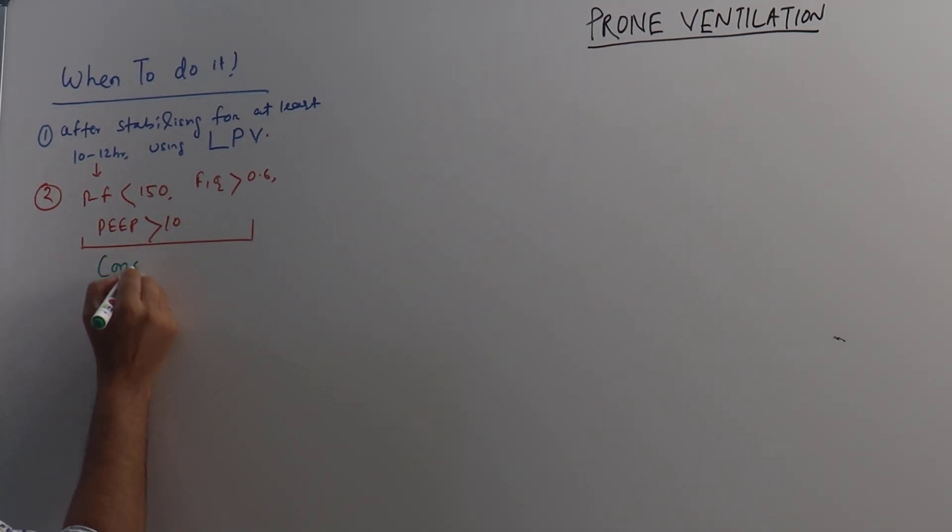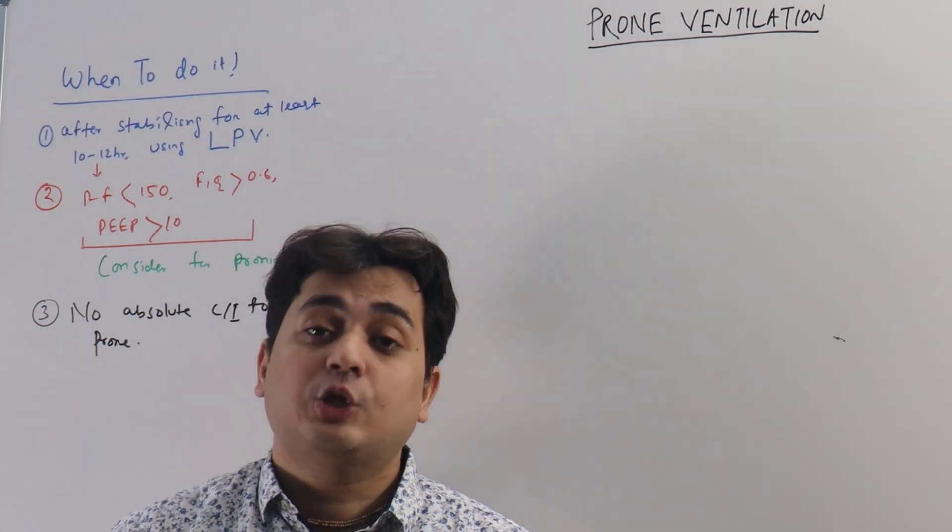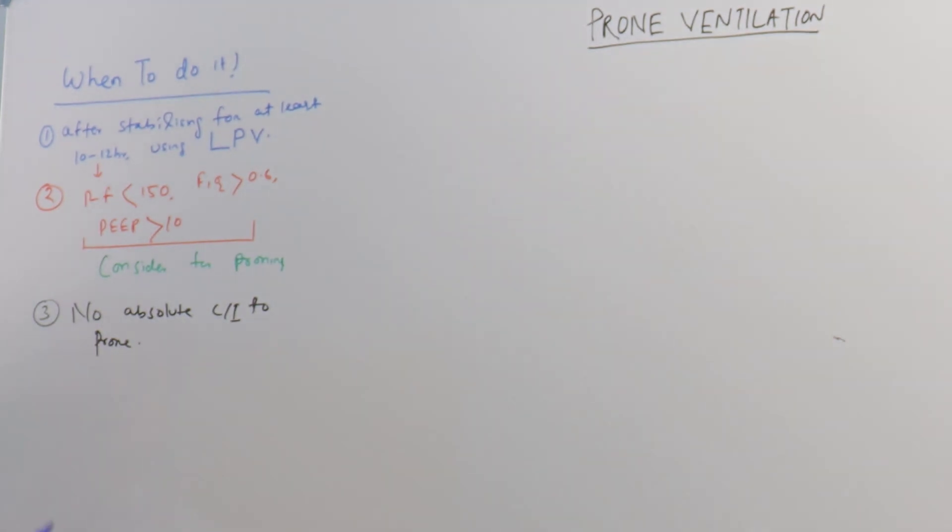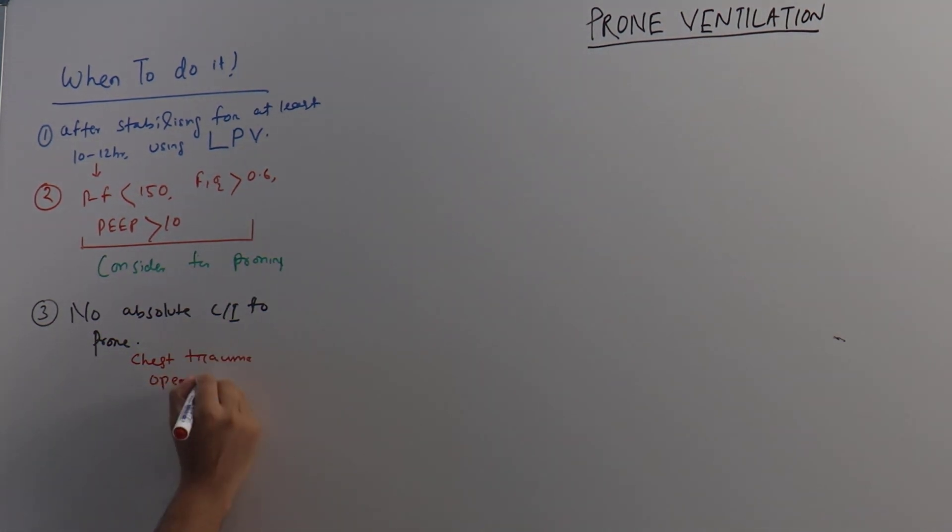There is no absolute contraindication to prone. If you think your patient may benefit from proning, then you must do proning. There may be one condition where it is absolutely contraindicated: that will be chest trauma, patient has open thorax, or patient has suffered a TBI with high intracranial pressure. So these are the situations you may consider not doing prone ventilation, but otherwise there is no absolute contraindication. All are relative contraindications.